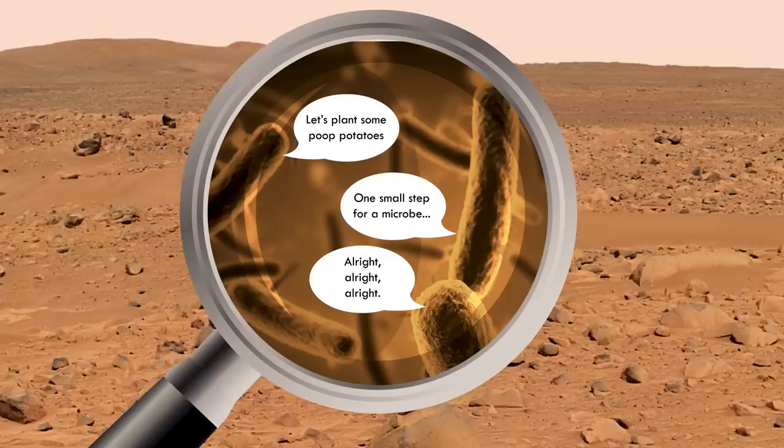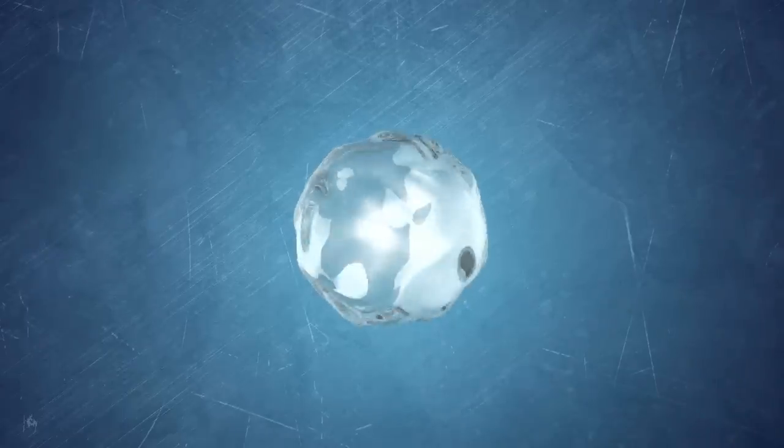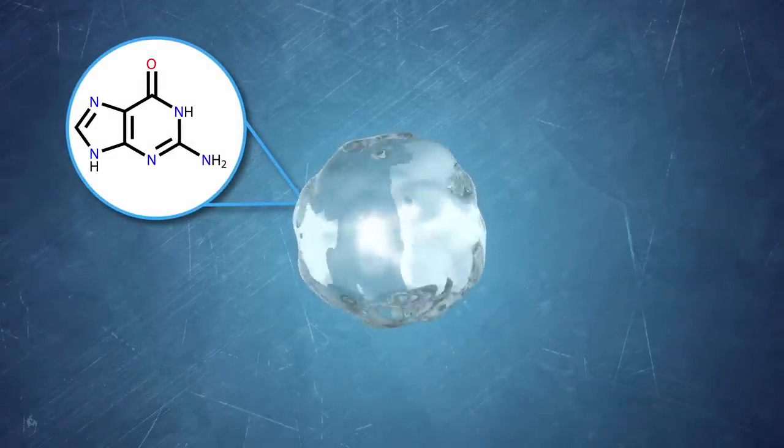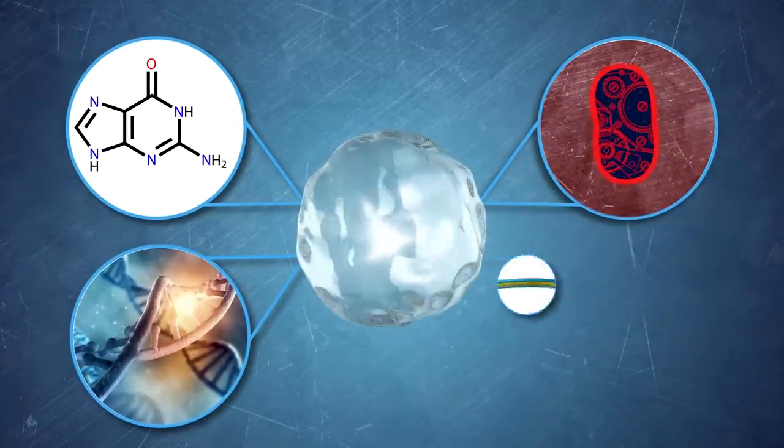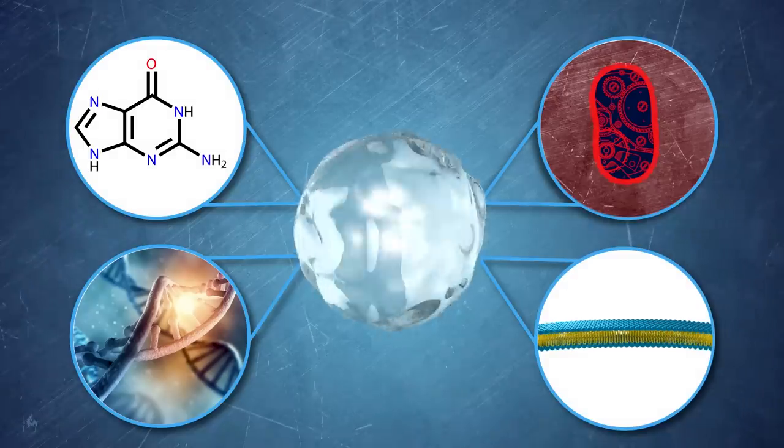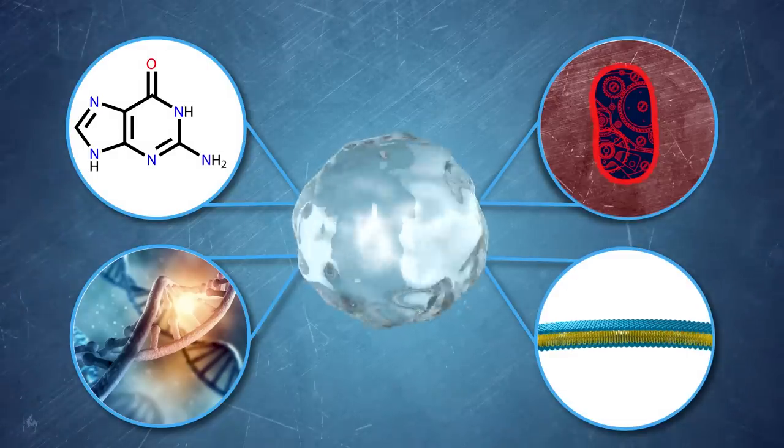But there are a couple things it seems that life can't do without. The universal needs for life are good ol' carbon and water. Life is basically organized chemistry. Inside every cell on Earth, the making and breaking of bonds, building cellular machinery, copying DNA, even the membranes that keep a cell from spilling its guts all depend on liquid H2O.